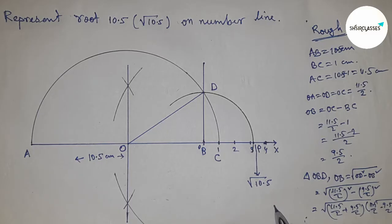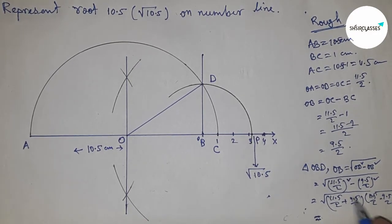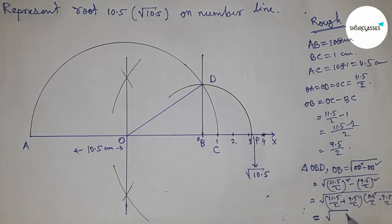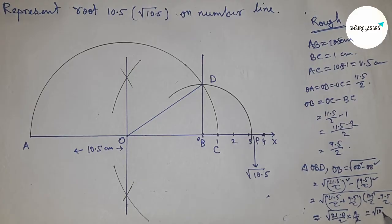So from this, root of 21 by 2 times 1 by 2, which equals root of 21 by 4. This simplifies to root 10.5.